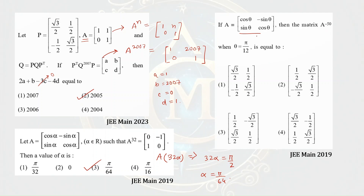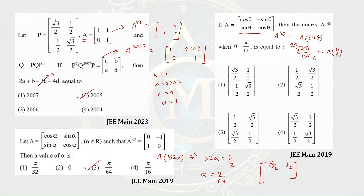Similarly, A to the power 50 equals A of 50 theta. With theta equals pi by 12, this becomes 50 pi by 12, which simplifies to 4 pi plus pi by 6, so A of pi by 6. The inverse is asked, so A inverse of pi by 6 equals A of minus pi by 6: cos(minus pi by 6) is root 3 over 2, then minus one-half and plus one-half, and root 3 over 2. Option 1 is the correct answer.